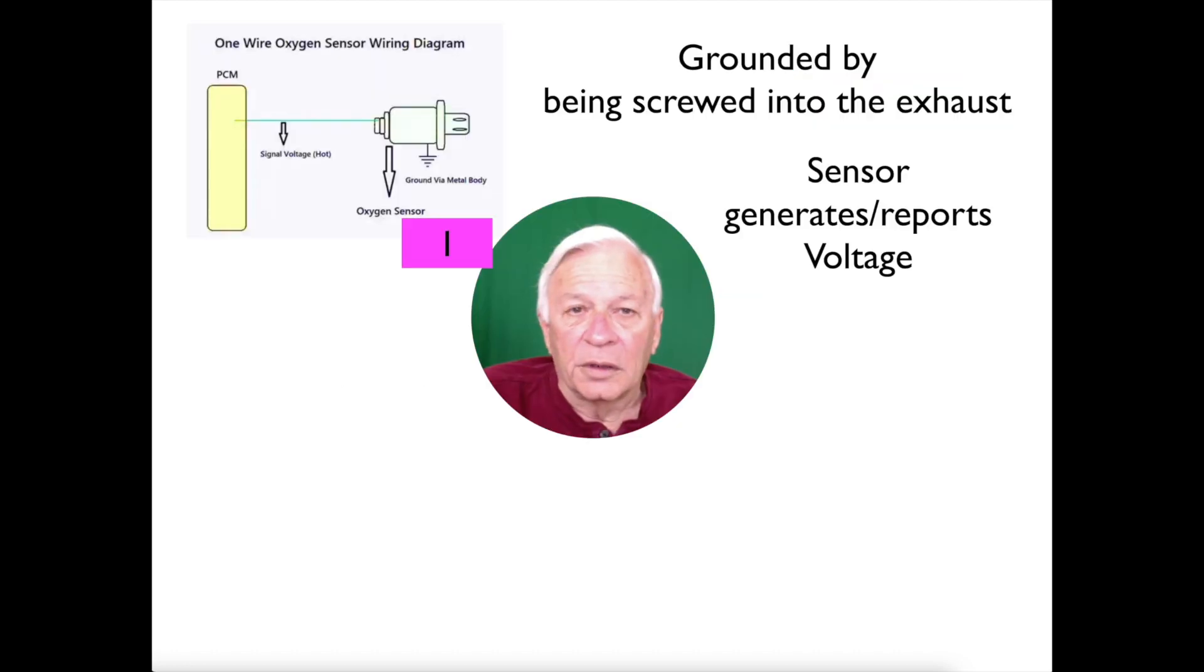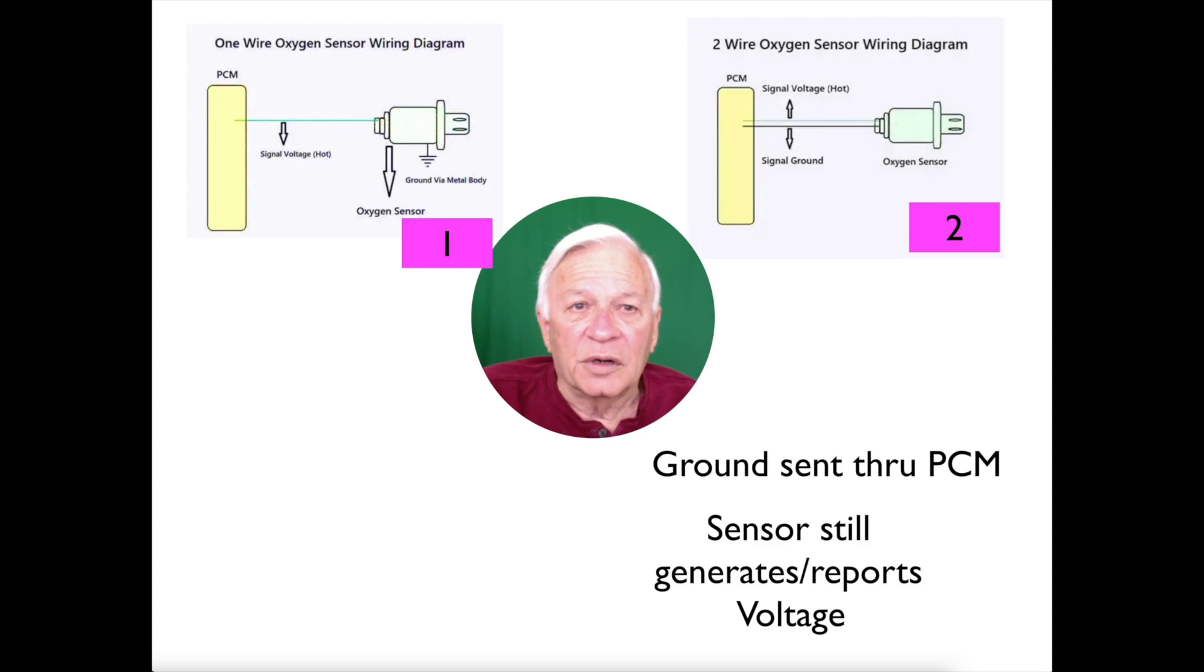This is a one-wire sensor. It is grounded by being screwed into the exhaust, and then the sensor generates and reports the voltage. In this type of sensor, it is grounded by the PCM, not by being screwed into the exhaust.